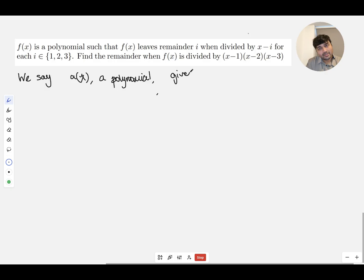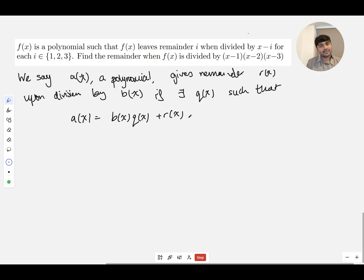That gives remainder r of x. In this case we're only looking at constants, but I may as well generalize it to remainders where the remainder is like a polynomial, upon division by some polynomial b of x, if there exists some q of x, a polynomial, or all of these are polynomials, such that a of x equals b of x times q of x plus r of x. So this is the definition or what we mean by when we say something gives a certain remainder.